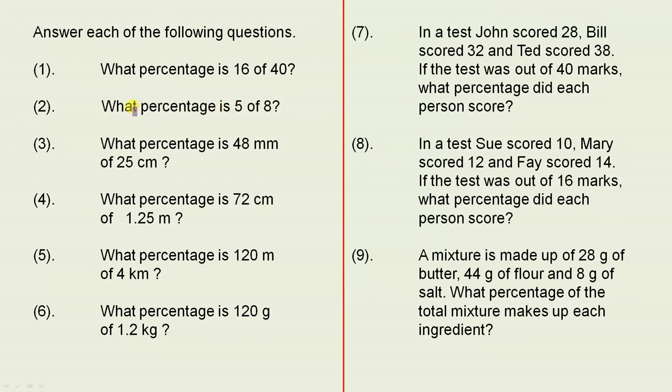So very quickly, if we just look at a few of them, what percentage is 5 of 8? Basically you form a fraction from each of these numbers, so you put the first one over the second, and then you multiply that by 100 over 1. So that will give you the percentage. Remember, the first number over the second number, that's the numerator, that's the denominator, you multiply by 100 over 1.